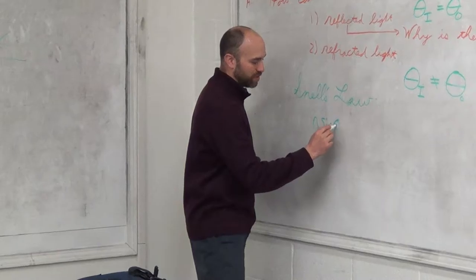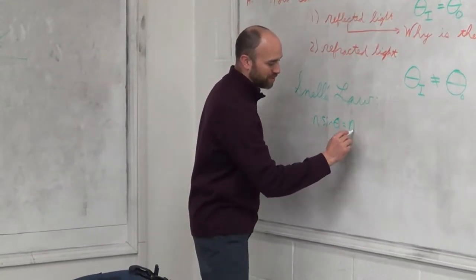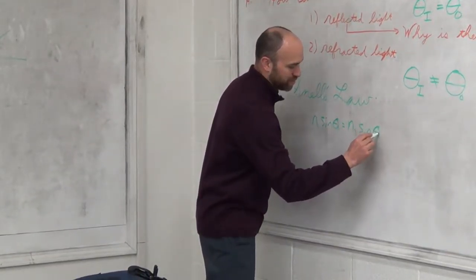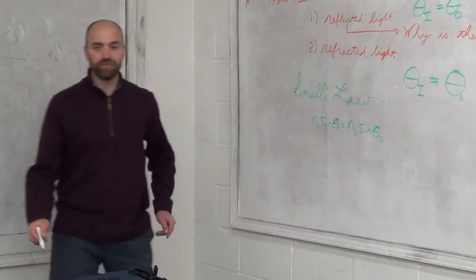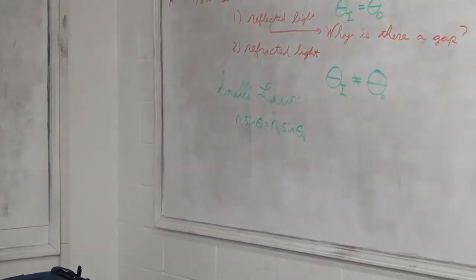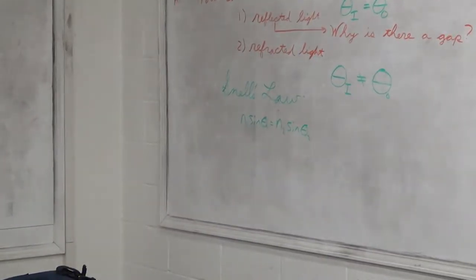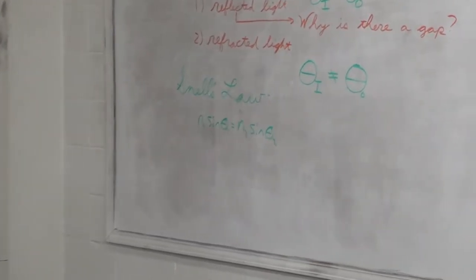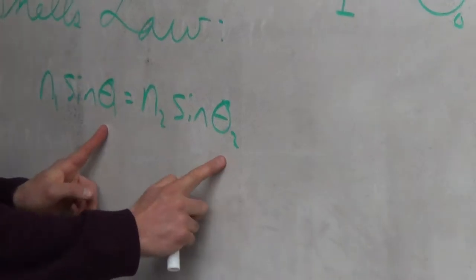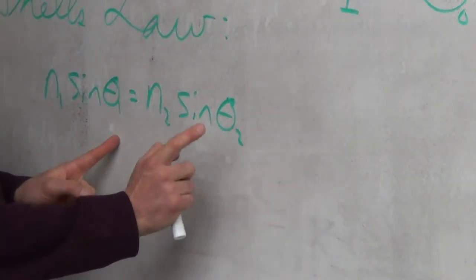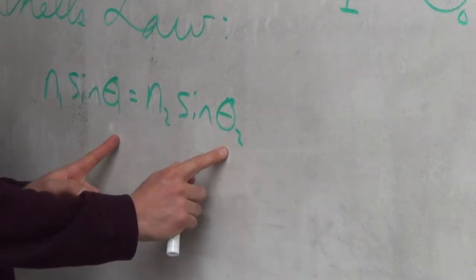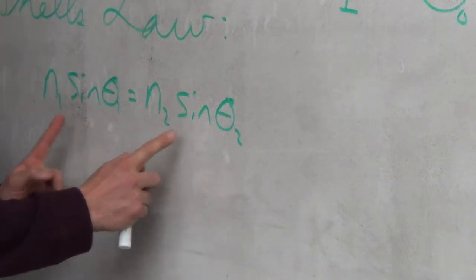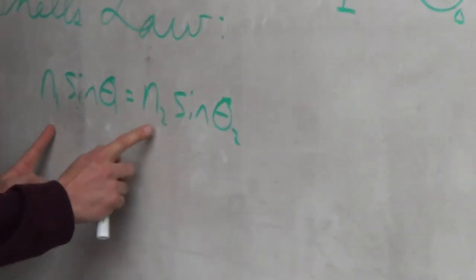N1 sine theta1 equals N2 sine theta2. It's actually a pretty simple relation once you know what it is. You might be asking: I know what theta1 and theta2 are — that's your in and out angles. I know what the sine function does. But what is this N1 and N2 all about?